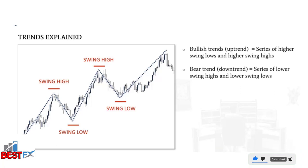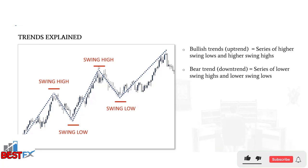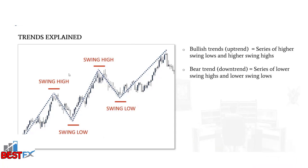In trends, we're talking about a series of higher highs and higher lows, which forms a bull trend, or a series of lower highs and lower lows, which forms a bear trend. This is a simple way to spot trends and see if they are still alive. If this sequence is broken, it either means price is starting to move sideways and pause, or the trend is reversing and a new trend is forming in the opposite direction.